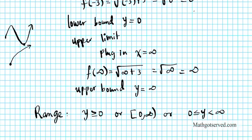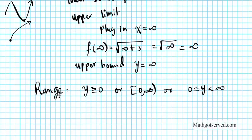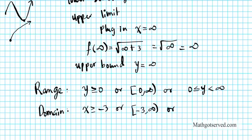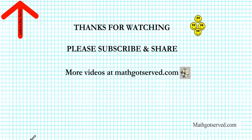So there you have it. The range is y ≥ 0, or [0, ∞). The domain is x ≥ -3, or [-3, ∞), or -3 ≤ x < ∞. Thanks so much for taking the time to watch this video. Please feel free to subscribe to my channel and share with your friends. More videos can be found at math.cadc.com. Thanks again and have a wonderful day.